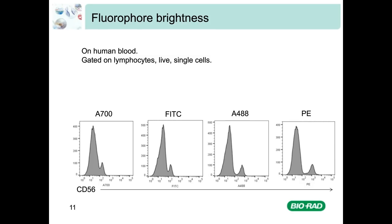We can clearly see the different fluorophores separating the CD56 positive population differently. Fluorophore brightness depends on how many photons a fluorophore emits when excited by a laser, and also the conversion rate of those photons when they hit the detectors and are converted into electrons. Alexa Fluor 700, which is a dim fluorophore, will not manage to separate the CD56 positive population very well. FITC, a moderately bright fluorophore, will manage to do a good job, but Alexa Fluor 488 will do it even better. PE, which is very bright on a system with a yellow-green laser, will give the best separation. Getting good separation of your population is key, as it makes analysis easier and gives leverage when trading off with other fluorophores in the panel.